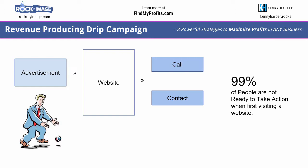Your average campaign has an advertisement or some sort of message that gets people to go to a website or a page where they can opt in, and you're asking people to call, make contact, or make a purchase right then and there. But remember, 99% of people are not ready to take action when they're first visiting a website or landing page — they just heard about this thing and now they want more information.